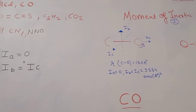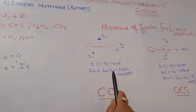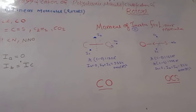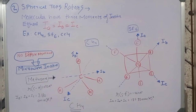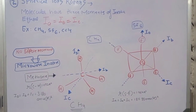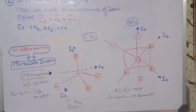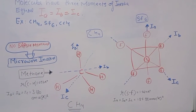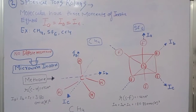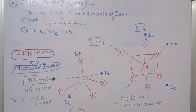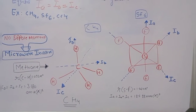The key point for linear molecules is that Ia = 0 while Ib = Ic. The second category is spherical top rotors, where all three moments of inertia are equal: Ia = Ib = Ic. Examples include CH4, SF6, and CCl4. Because these molecules have no dipole moment, they are microwave inactive and show no microwave spectrum.